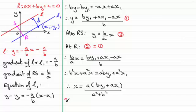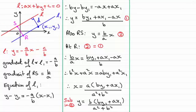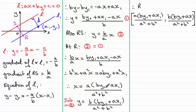I can substitute that x value into equation 2 to get the corresponding y coordinate. Substituting in equation 2, y equals b over a times x; the a's cancel, leaving y equals b times the quantity by1 plus ax1, all divided by a squared plus b squared. So the coordinates of r are the x and y values we just found.